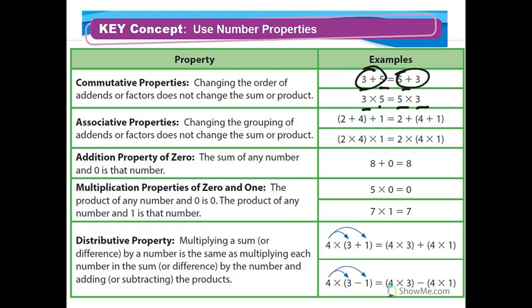The associative property: changing the grouping of addends or factors does not change the sum or product. With addition, (two plus four) plus one and two plus (four plus one) both equal seven. With multiplication, (two times four) times one and two times (four times one) — the parentheses are around different numbers but the product is still eight.